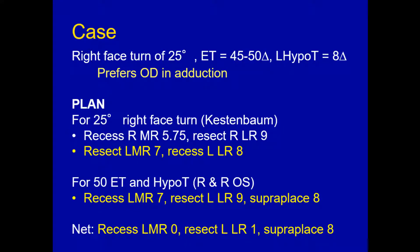She has a right face turn of 25 degrees, a left esotropia of 45 to 50 prism diopters, and a left hypotropia of 8 prism diopters. She prefers the right eye in adduction, so the fixing eye is the right eye. Therefore, we must use surgery on the right eye to straighten the head, and surgery on the left eye to correct the strabismus. We need to do the full Kestenbaum-Anderson surgery on the right eye because that's the dominant fixing eye — that's what controls head position.